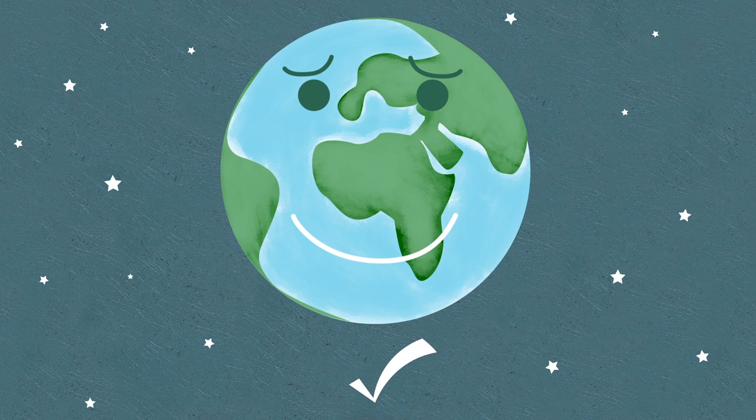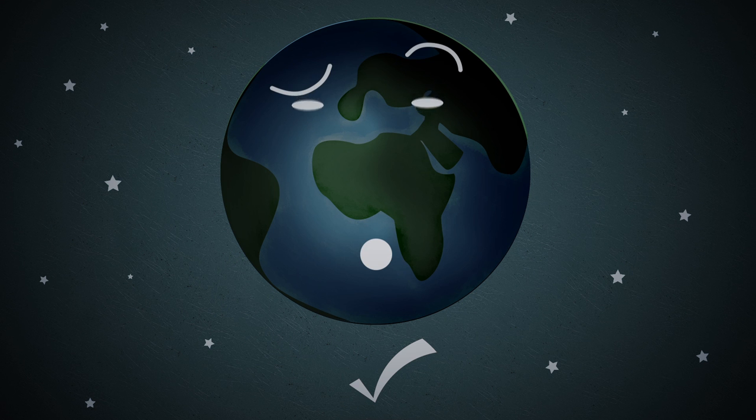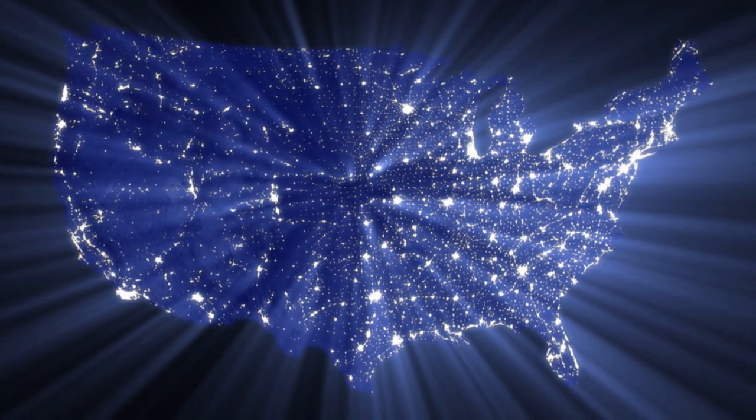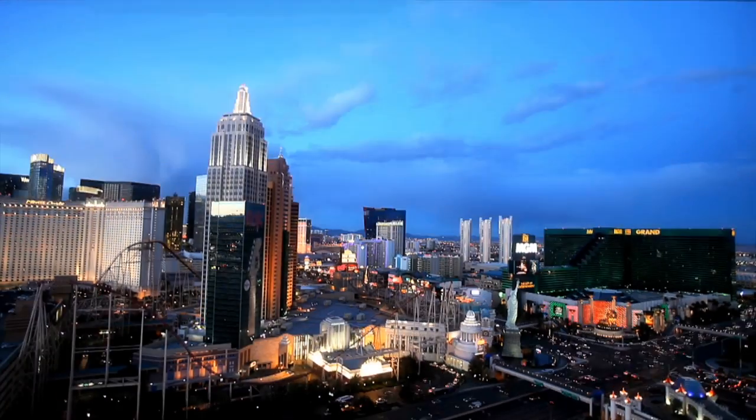Smart meters can pinpoint and fix problems, often before they happen. So if an outage does occur, power can be restored quickly, keeping businesses up and homes safe during storms and heat waves. If we get on board with smart grid technologies,